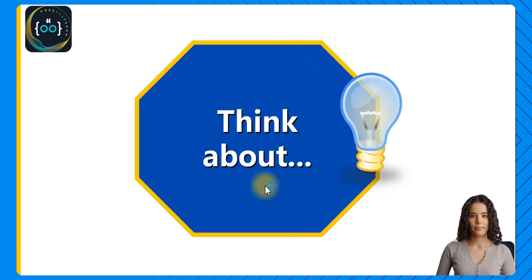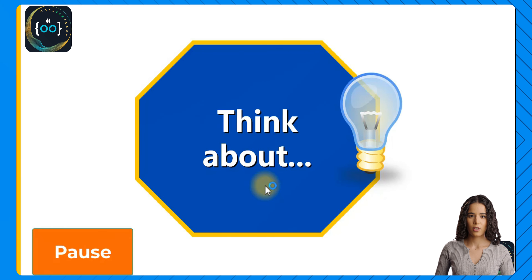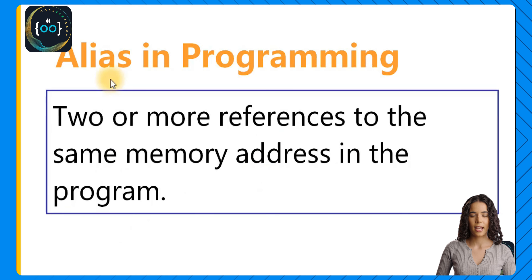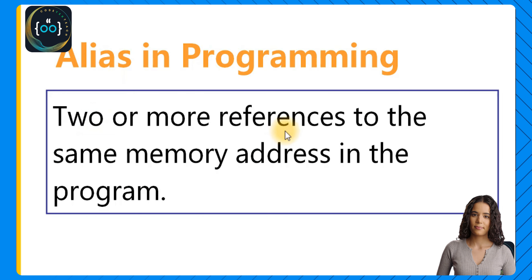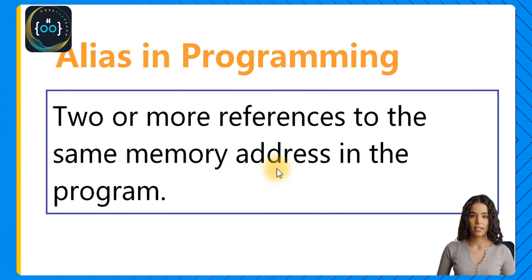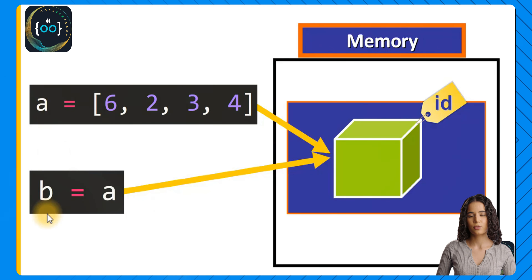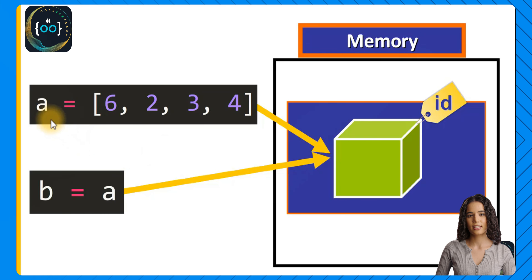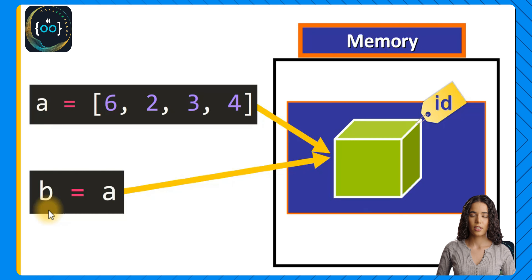Think about this for a moment — in the real world, what is an alias? According to Merriam-Webster Online Dictionary, an alias is used to indicate an additional name that a person sometimes uses. In programming, having an alias is very similar — an object has an alias if there are two or more references to the same memory address or to the same object in the program. For example, we have two variables a and b — they both point or reference the same memory location. We have two different names referring to the same object, to the same memory address. This is what an alias is in object-oriented programming: two names or more that refer to the same object.